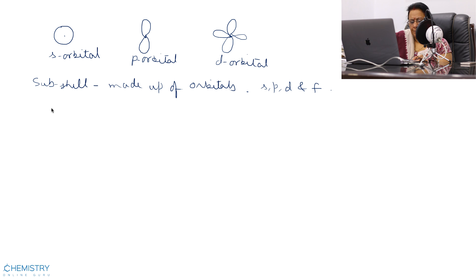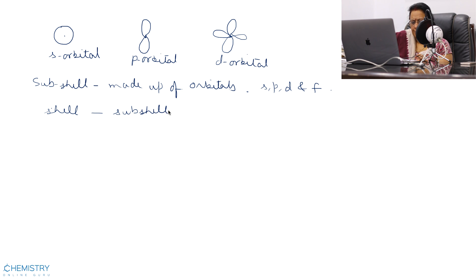S, P, D and F subshells have 1, 3, 5 and 7 orbitals respectively. Shells are made up of subshells, subshells are made up of orbitals, and electrons are present in orbitals.